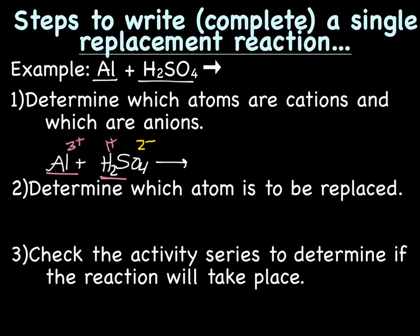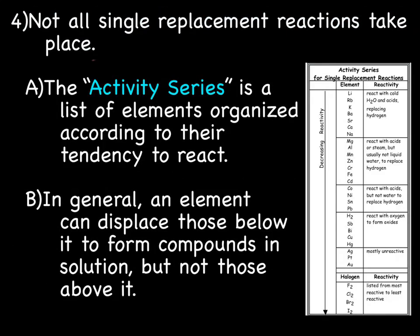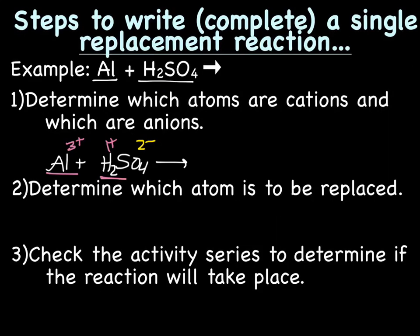We're going to check the activity series to determine if the reaction will take place. The winner of the fight between aluminum and hydrogen gets to hook up with sulfate. The winner is determined by who is higher on the reactivity series. Let's find aluminum right there, and hydrogen is right there. Who's higher up? Aluminum. So aluminum wins the fight. Aluminum is stronger than hydrogen, so he's going to knock off hydrogen, hook up with sulfate, making a new compound. So the answer is yes, the reaction is going to take place.